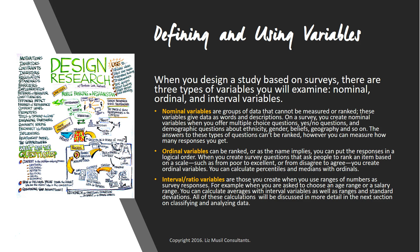When you design a study based on surveys, there are three types of variables — three types of information: nominal, ordinal, and interval. Nominal variables are groups of data that cannot be measured or ranked; these variables give data as words and descriptions. On a survey, you create nominal variables when you offer multiple choice questions, yes/no questions, and demographic questions about ethnicity, gender, beliefs, or geography. The answers to these questions can't be ranked, however you can measure how many responses you get. Ordinal variables can be ranked; when you create survey questions that ask people to rank an item on a scale — such as from poor to excellent or from disagree to agree — you create ordinal variables. You can calculate percentiles and medians with ordinals.